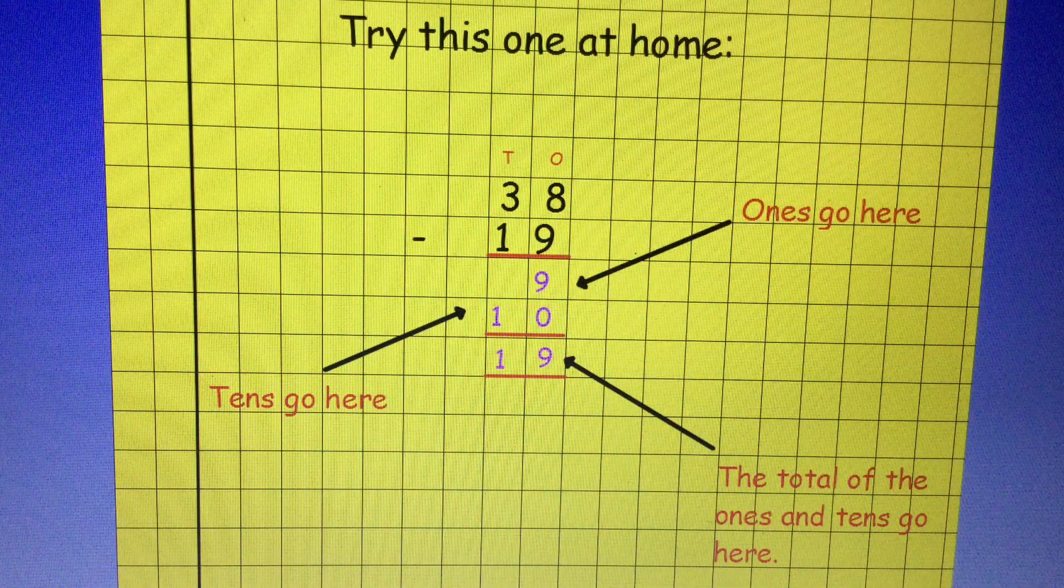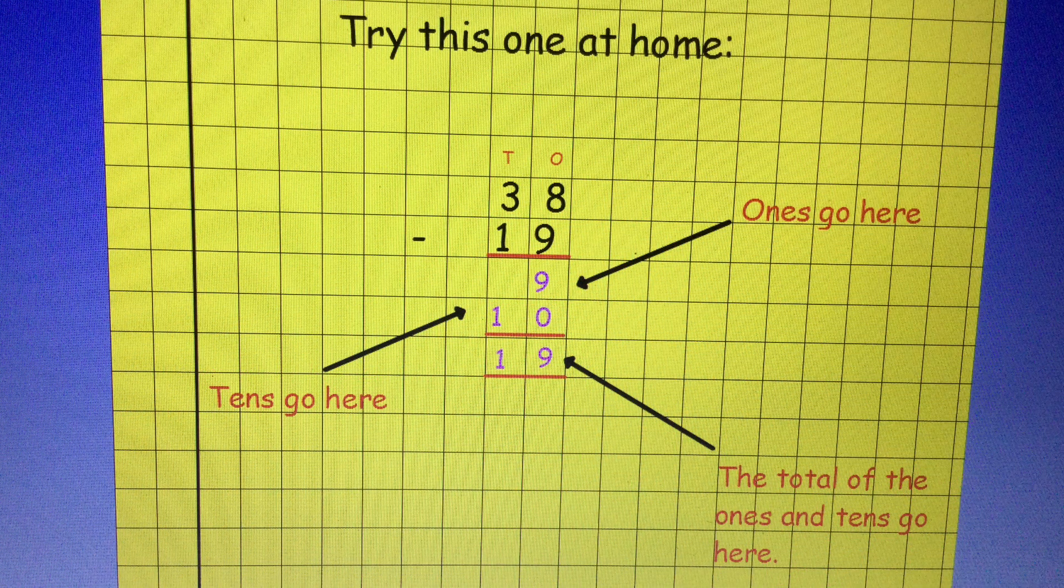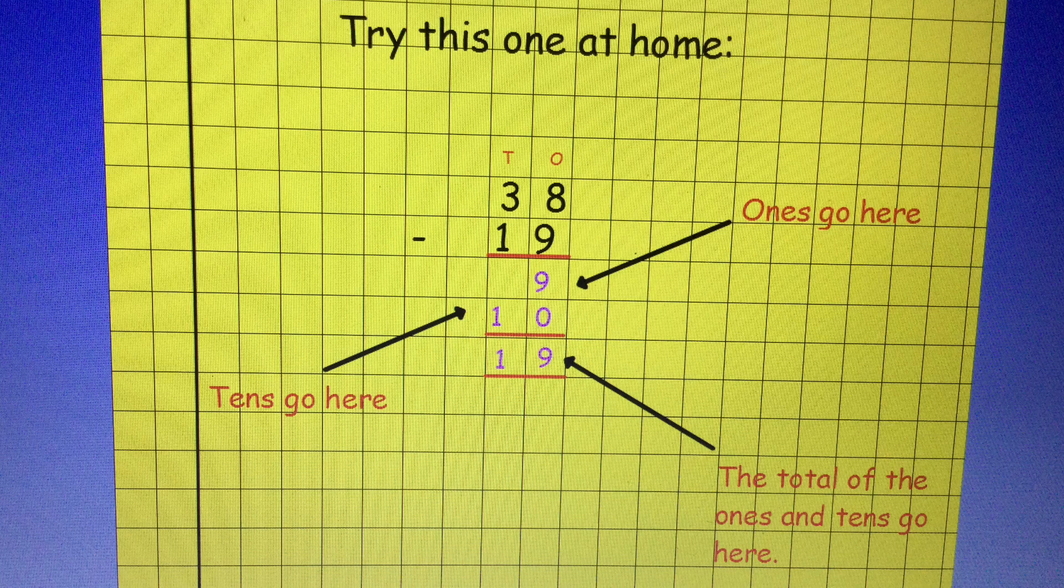And the answer to 38 take away 19 is 19. Remember that you would have needed to have knocked next door, exchanging a 10 from 30 and turning 8 into 18.